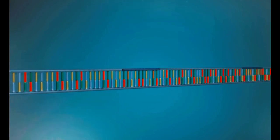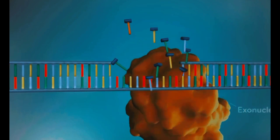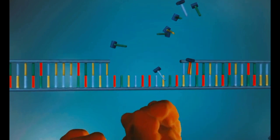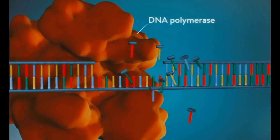Once the new DNA has been made, the enzyme exonuclease removes all the RNA primers from both strands of DNA. Another DNA polymerase enzyme then fills in the gaps that are left behind with DNA.